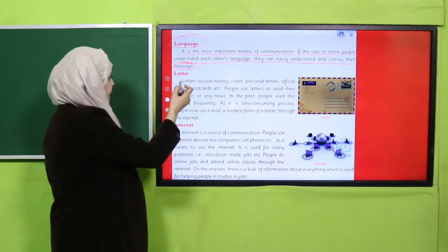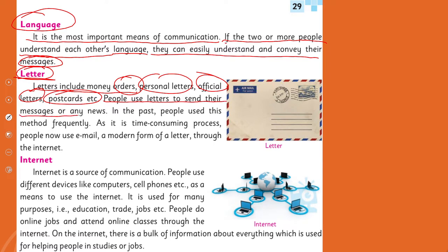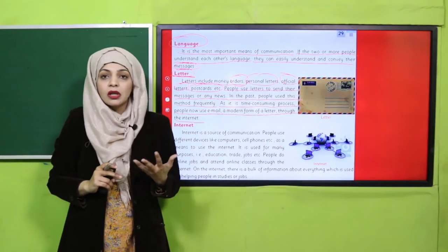Agar aapko language samajh mein aati hai kisi doosre ki, to aap easily uski baat samajh sakte hain. Agar mujhe Spanish ya French nahi aati, to it is very difficult to understand that person. So language is the first means of verbal communication. Let's move forward towards the second means of communication — letter. It is also a verbal means of communication.